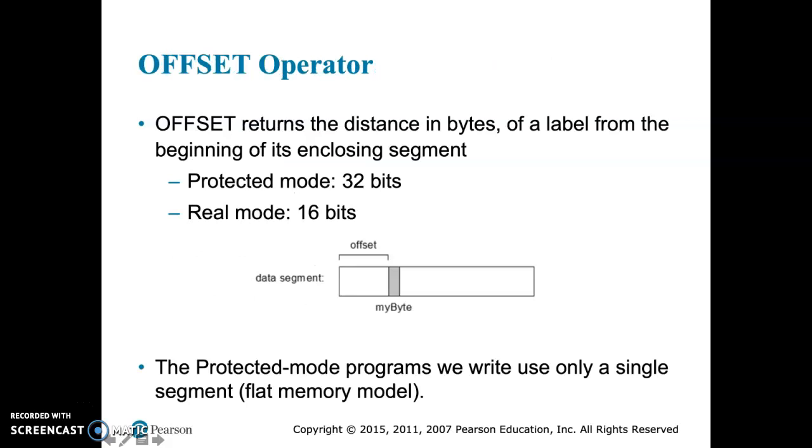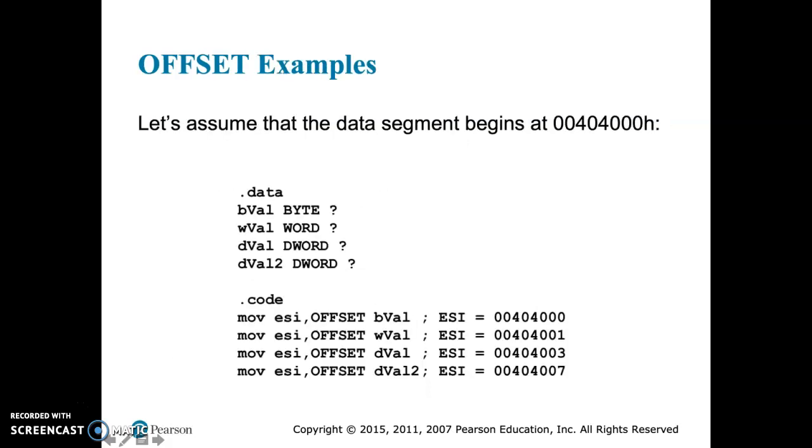The OFFSET operator returns the distance of a label in bytes, remember bytes are 8 bits, from the beginning of the enclosing segment. So when we define several variables, the offset is going to tell us for a given label, which is our assembly word for variables, it's going to tell us how far from the beginning that particular label is.